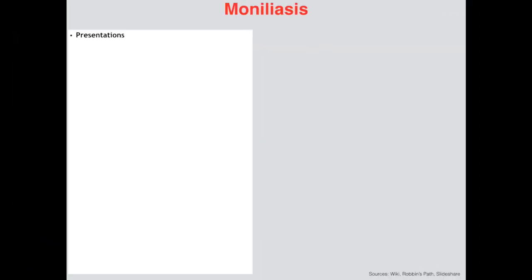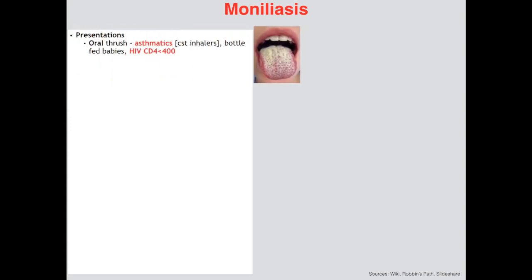For pathologies, running from least to most severe, starting with oral thrush: patients at risk are asthmatics due to corticosteroid inhaler use — always tell those patients to rinse their mouth after each use. Bottle-fed babies are also at risk as they are technically immunodeficient. And of course patients with HIV/AIDS whose CD4 T-cell count is below 400. Clinically it presents as a white superficial pseudomembrane that is easily scraped off, distinguishing it from leukoplakia which presents on the lateral aspect of the tongue and will bleed on scraping.